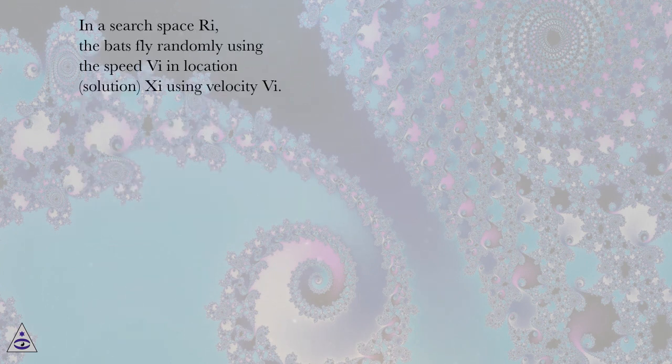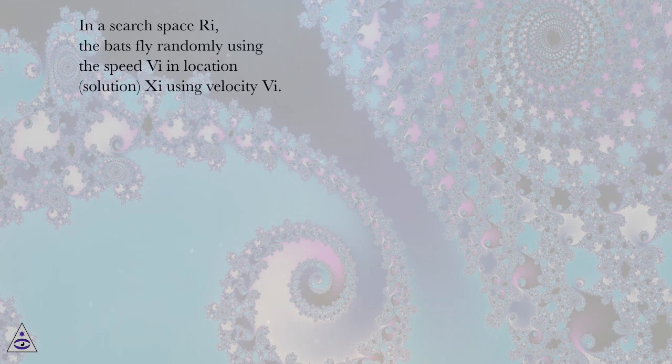In a search space, the bats fly randomly using the speed v in location (solution) zi using velocity v. They produce pulses at a static wavelength lambda with a variable frequency F and an intensity A, differs from a big positive A0 to a smallest constant value amine, to hunt for prey. When the bats choose the finest results, they choose a local result from the best selected ones.